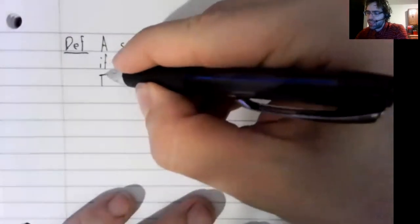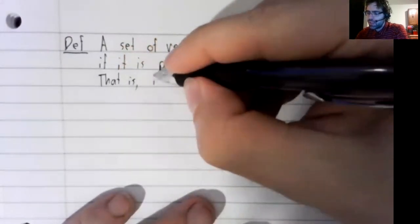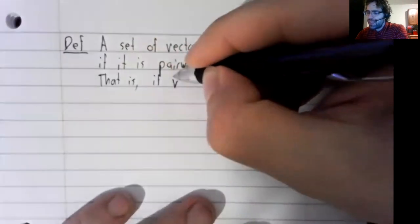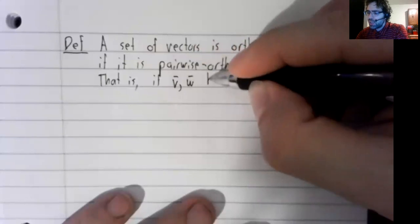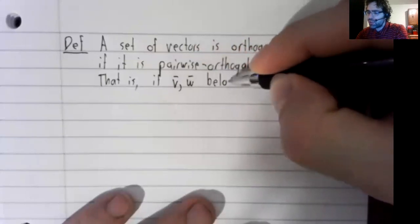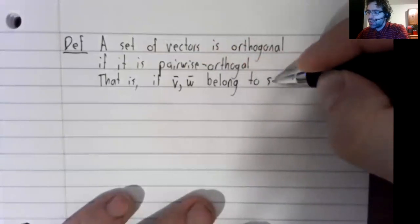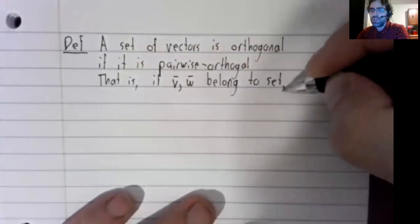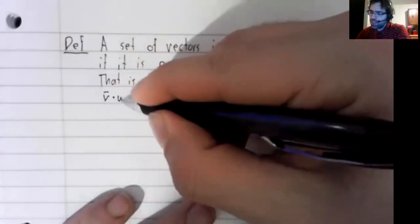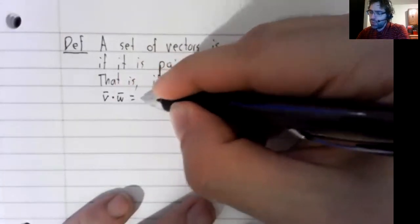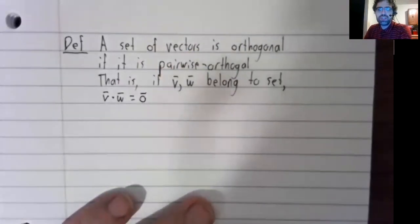That is, if V and W are two vectors that both belong to the set, then V dot W equals zero.